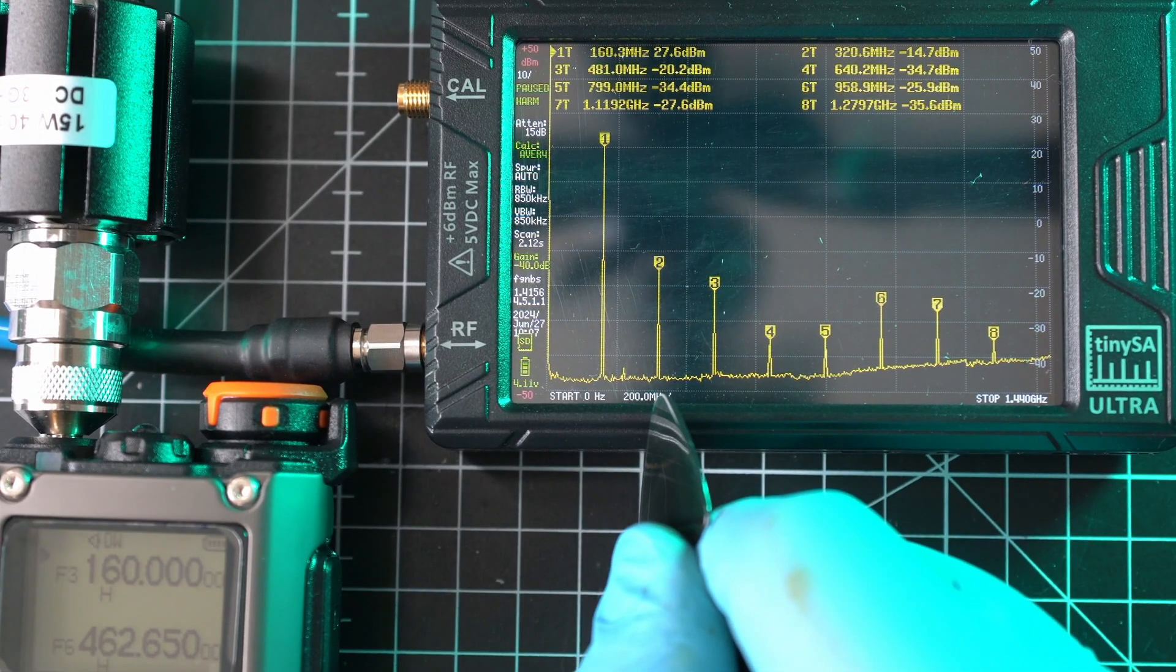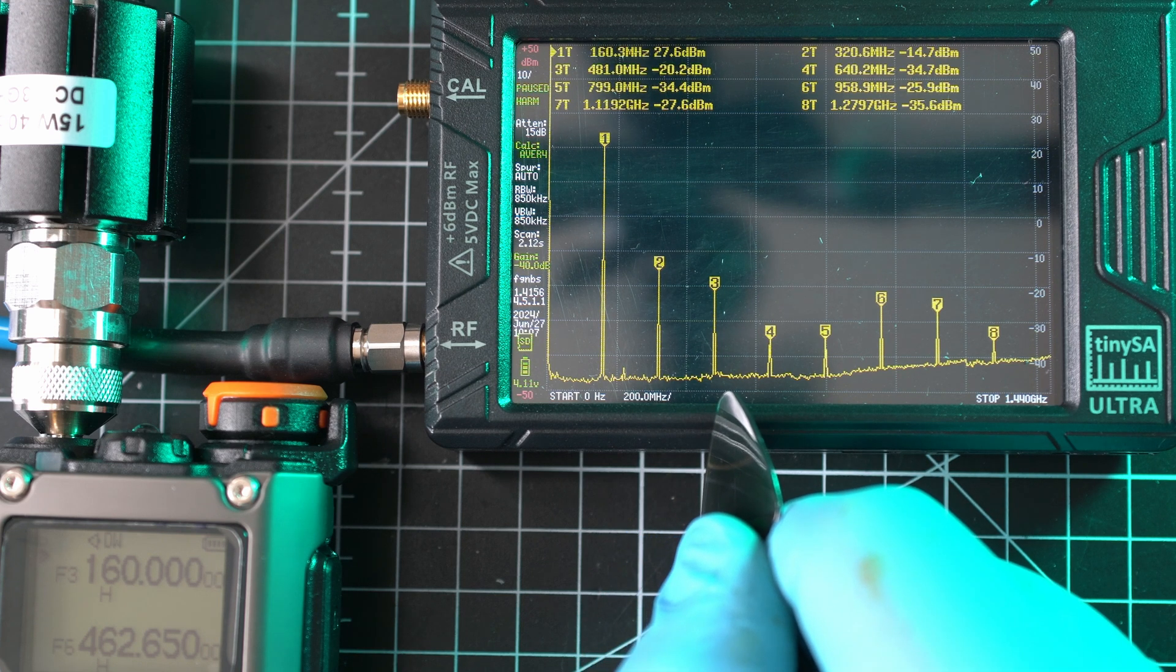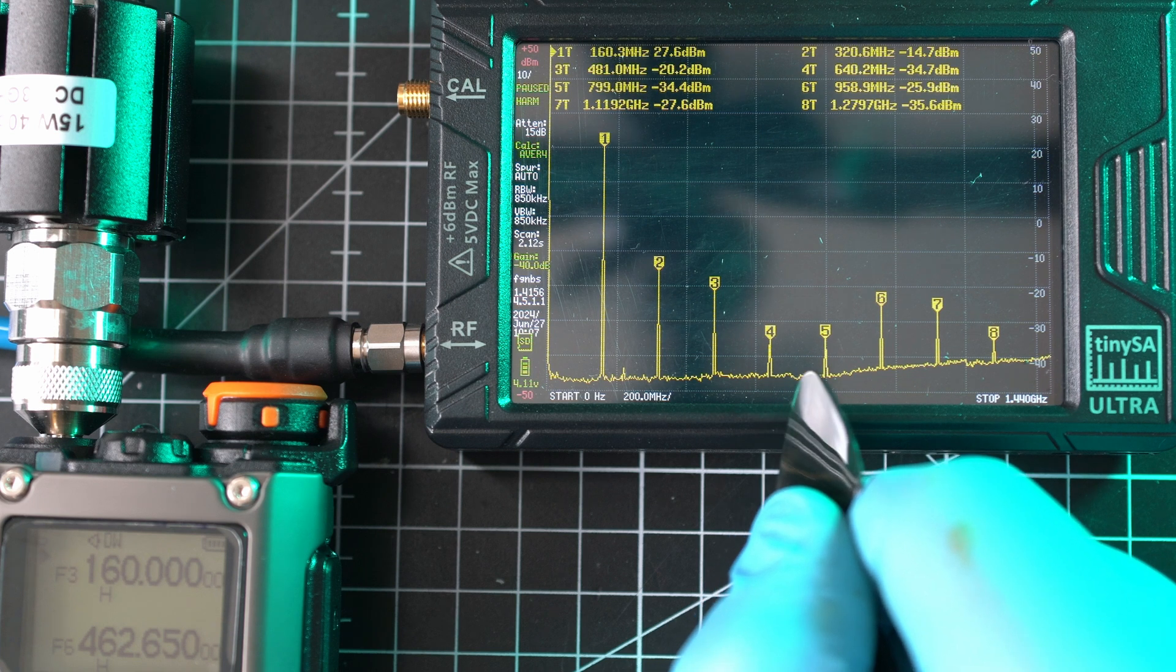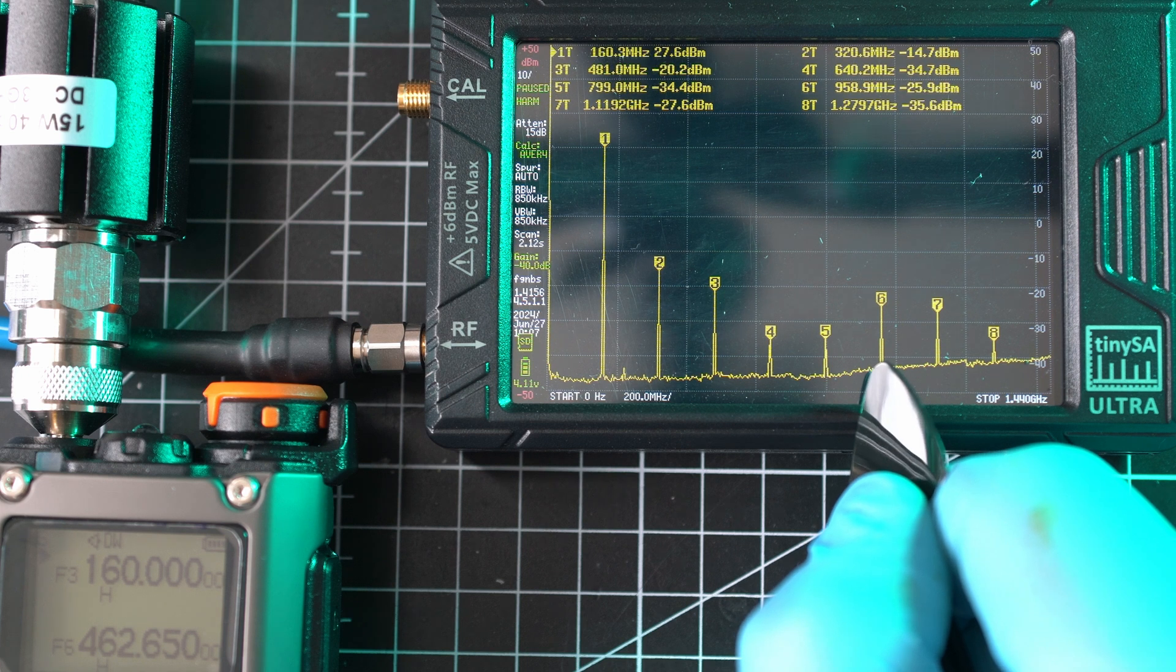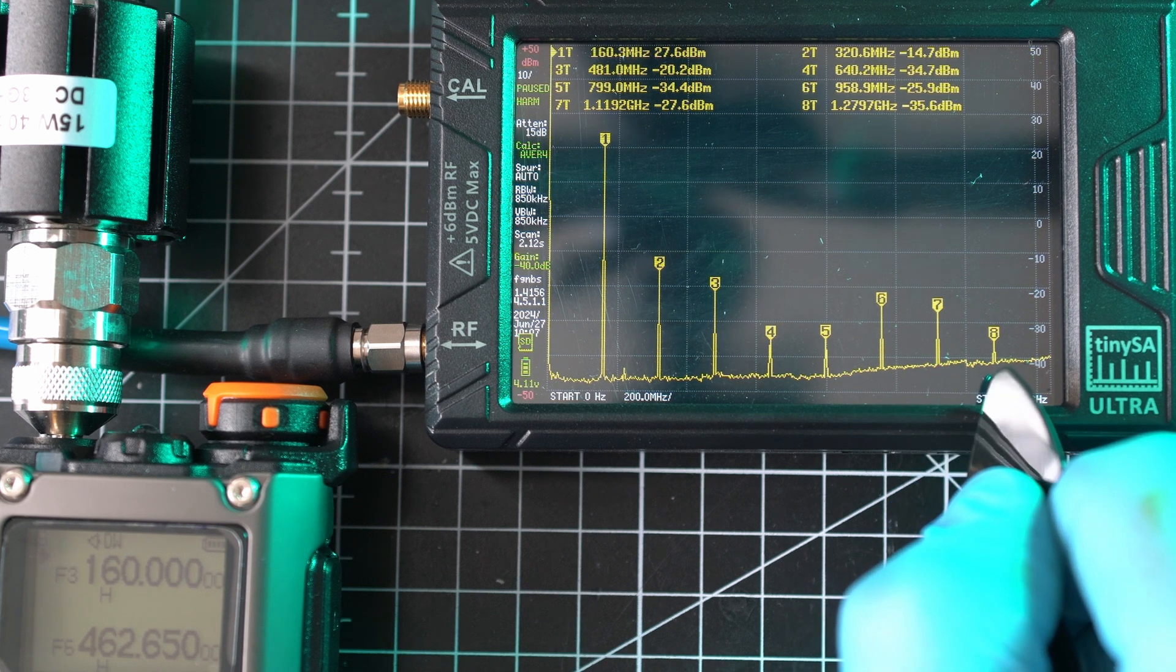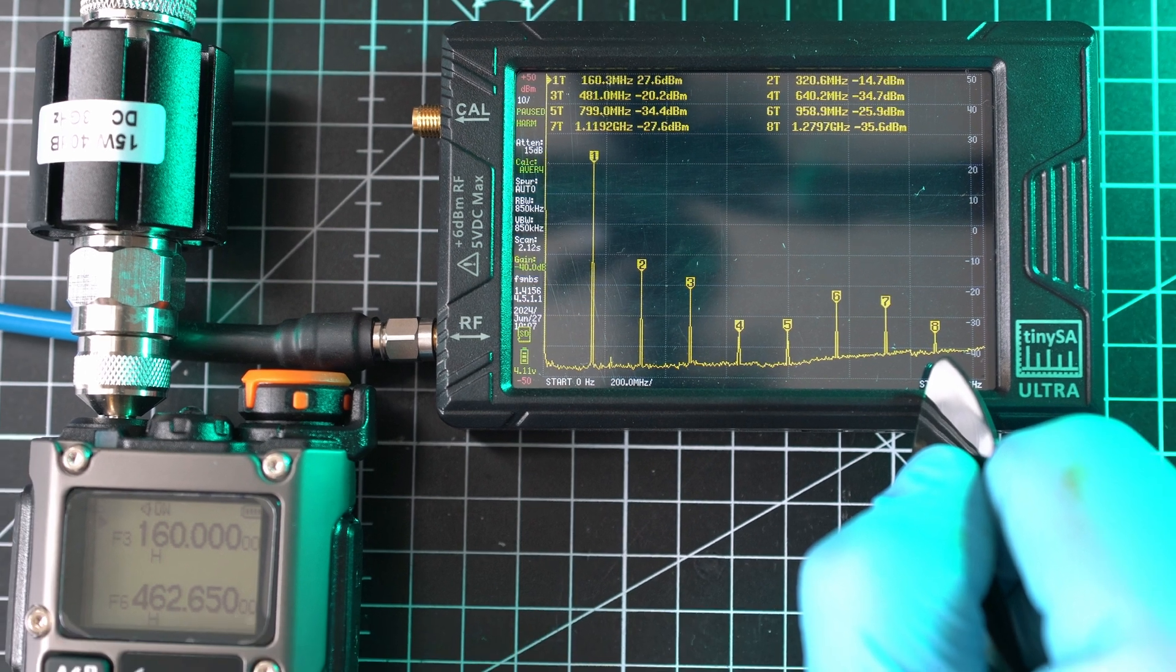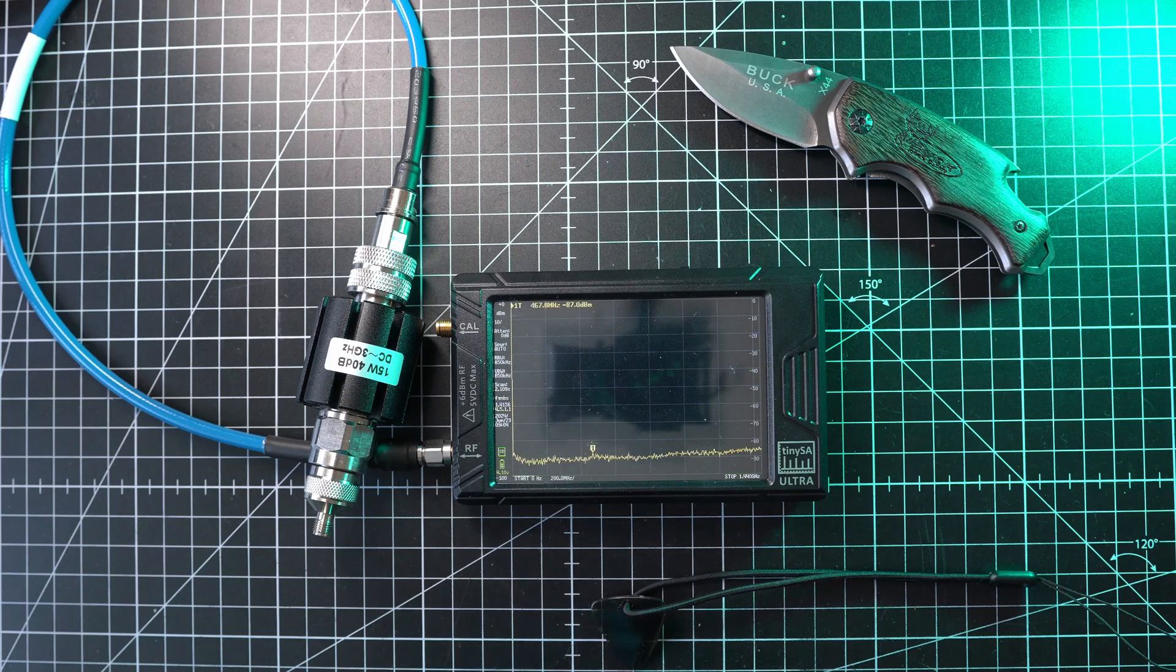Second on 320 MHz at negative 14 dBm. Third 481 MHz at negative 20 dBm lower. Fourth on 640 MHz at negative 34 dBm. Fifth 719 MHz at negative 34 dBm. Sixth on 958 MHz at negative 25 dBm. Seventh at 1.1 GHz at negative 27 dBm. And last 8th on 1.28 GHz at negative 35 dBm lower from primary signal. All of these are over the limit of negative 40 dBm.